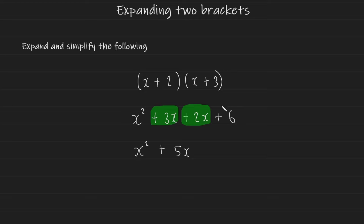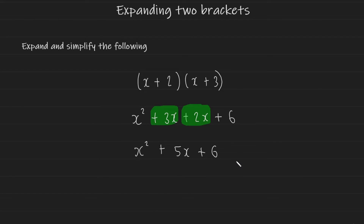And of course the final term, the constant plus 6, is the only number in the expression. So we just write it down at the end like this. And there you have it — that's how you expand two brackets.